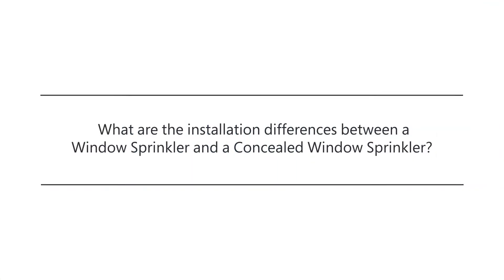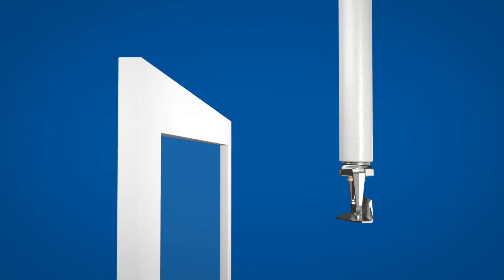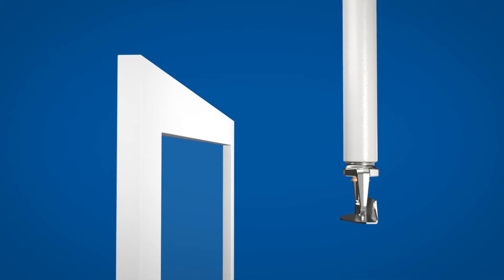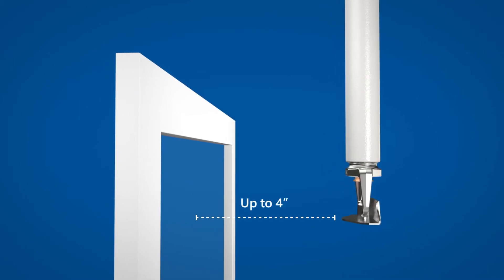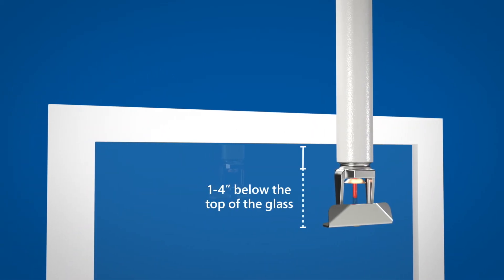What are the installation differences between a window sprinkler and a concealed window sprinkler? Exposed window sprinklers are designed to be installed directly in front of the glass, up to four inches away. This sprinkler sits one to four inches below the top of the glass.